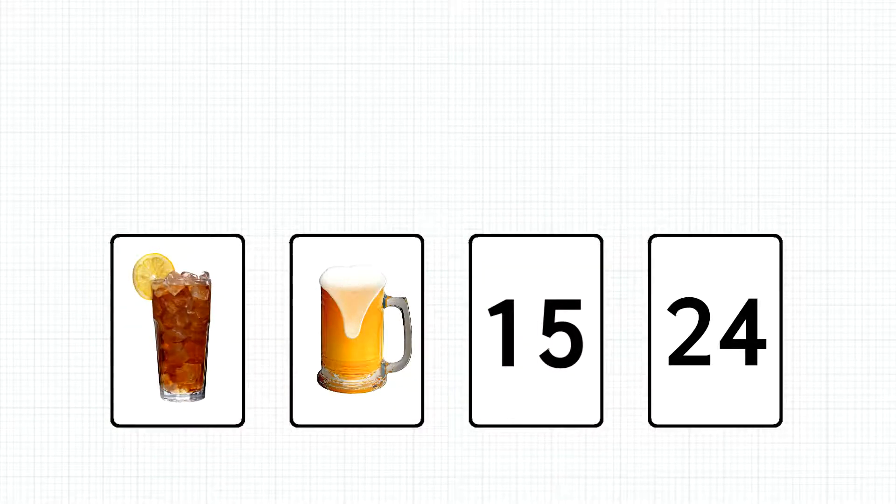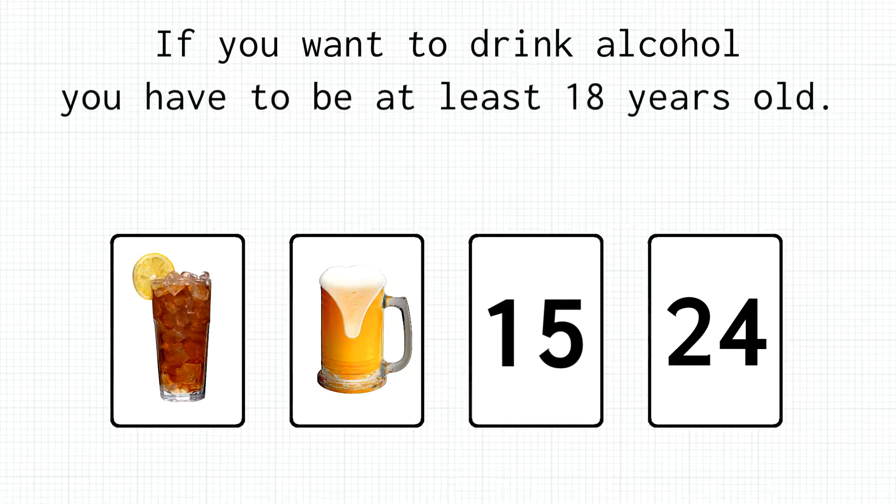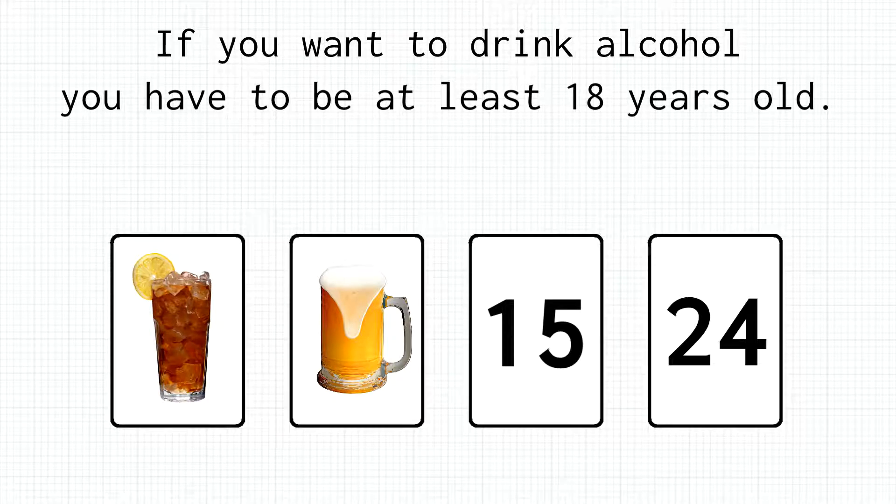Let our cards now be patrons in a bar, with the age written on one side and the beverage they ordered on the other side. Now, an important rule in any bar is, if you want to drink alcohol, you have to be at least 18 years old. Now the exact number here differs from country to country, but you get the idea. And now there are 4 cards.